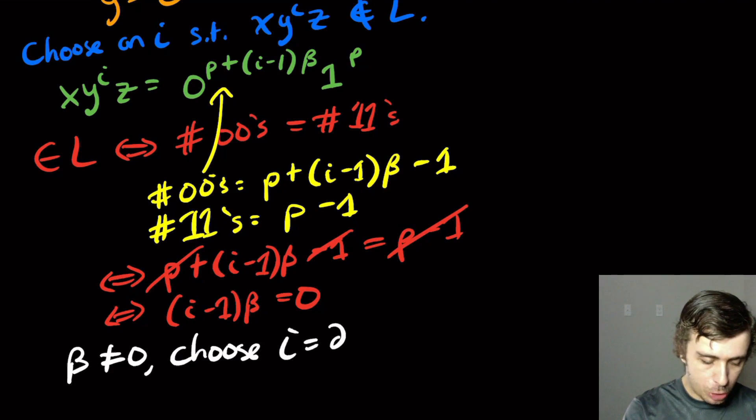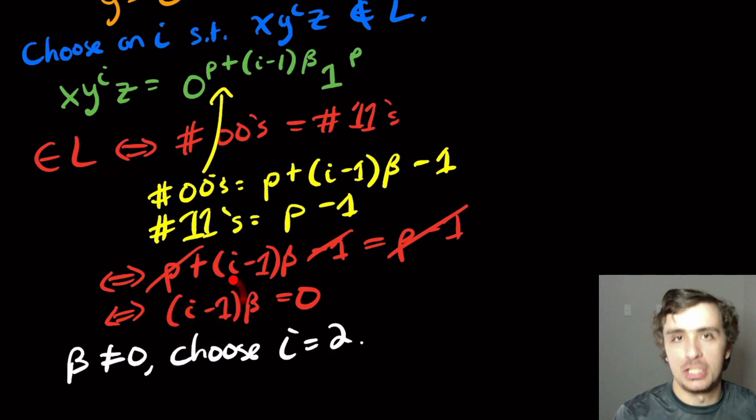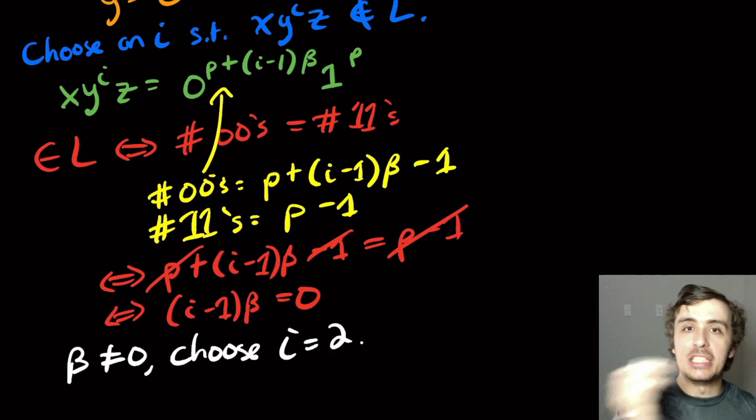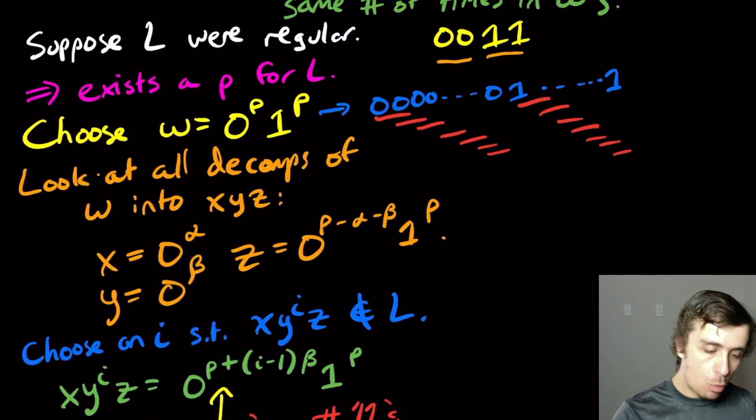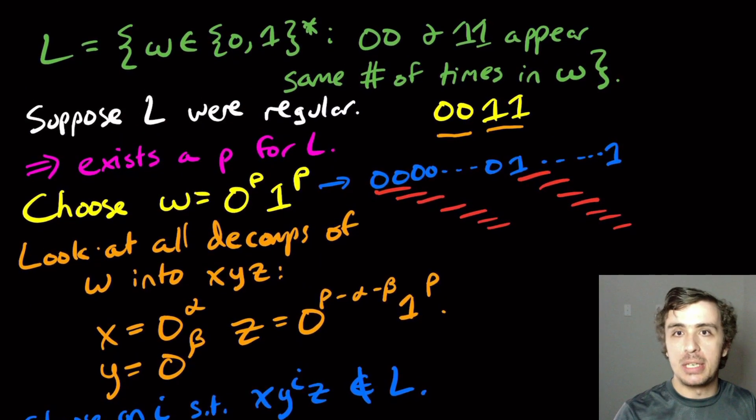You can pick any value of i that you want, as long as it's not one. So that shows us that we have arrived at a string that is not in the language, and that would contradict the for all statement in the pumping lemma. Therefore, we have shown that this language is not regular.